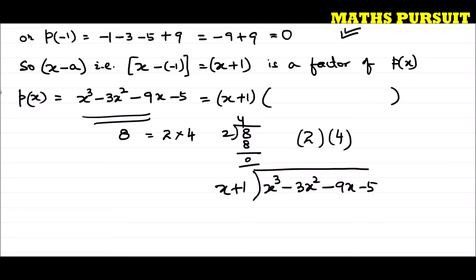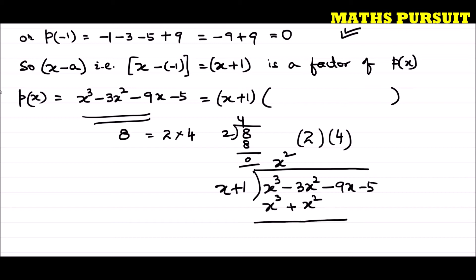To start the division: what should I multiply by x to get x to the power 3? The answer is x to the power 2. So x to the power 2 times x is x to the power 3, and x to the power 2 times 1 is x to the power 2. After subtracting, we are left with minus 4x to the power 2 minus 9x minus 5.